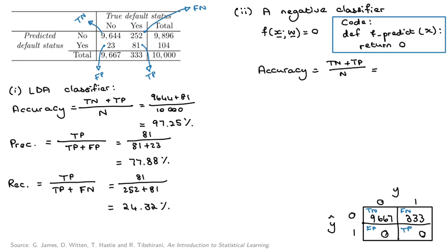This negative classifier gets an accuracy. Now let's go through here. So we know we've got 10,000 points. At the top there, our true negatives are 9667 plus our true positives, zero. So we have 9667. Awesome. So we have a classifier with an accuracy of 96.67%.